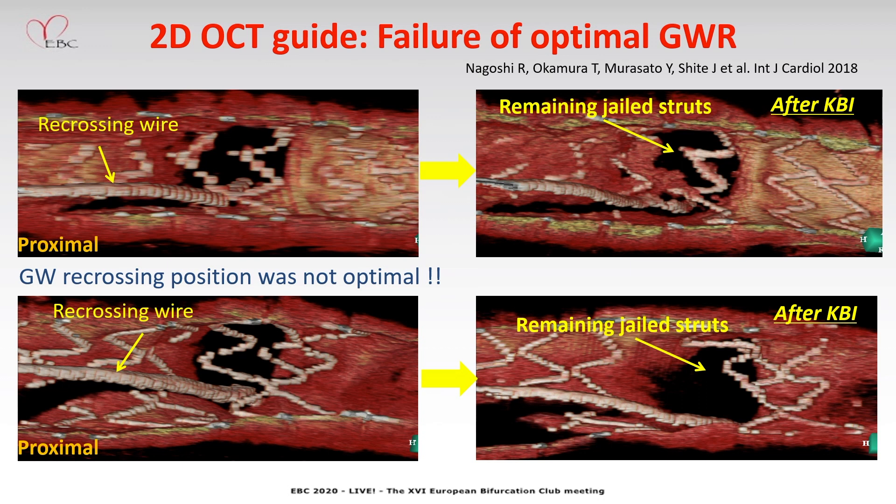These are the representative cases of failure of optimal guidewire recrossing under 2D OCT guidance. The operator cannot identify the actual guidewire recrossing point. In the upper case, here you can see guidewire recrossing in a small cell at the side branch ostium and final kissing balloon inflation — most stent struts remained at the side branch ostium. In the lower case, guidewire recrossing in the proximal cell. The operator performs kissing balloon inflation; however, stent struts protrude into the main vessel cell.